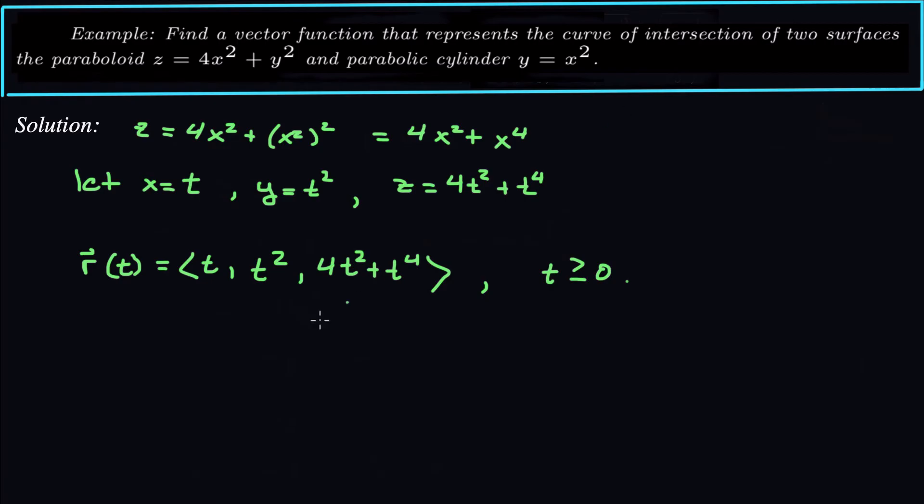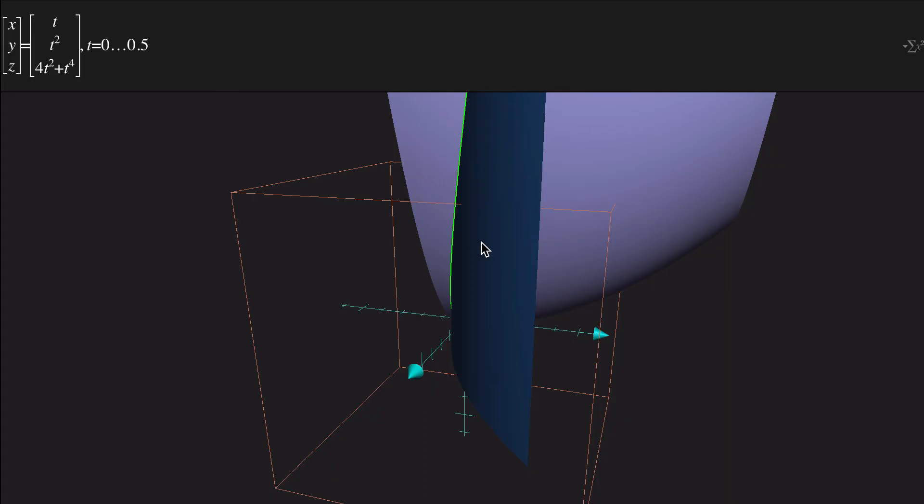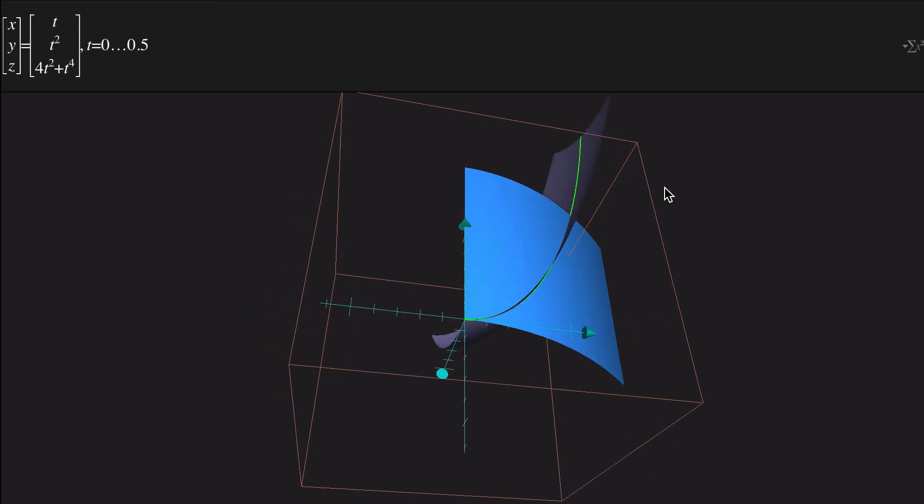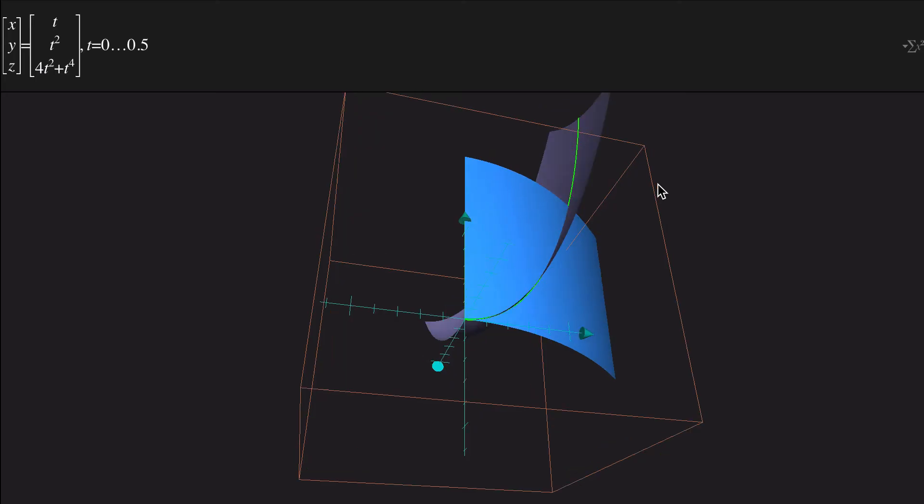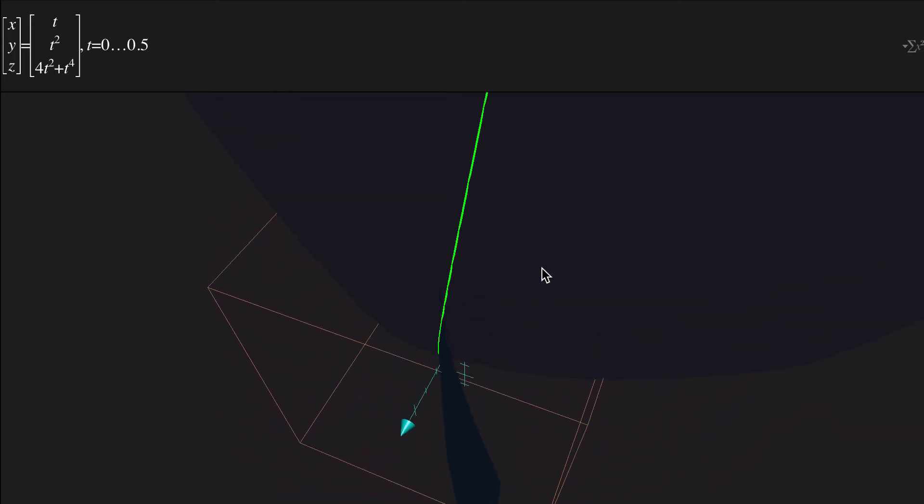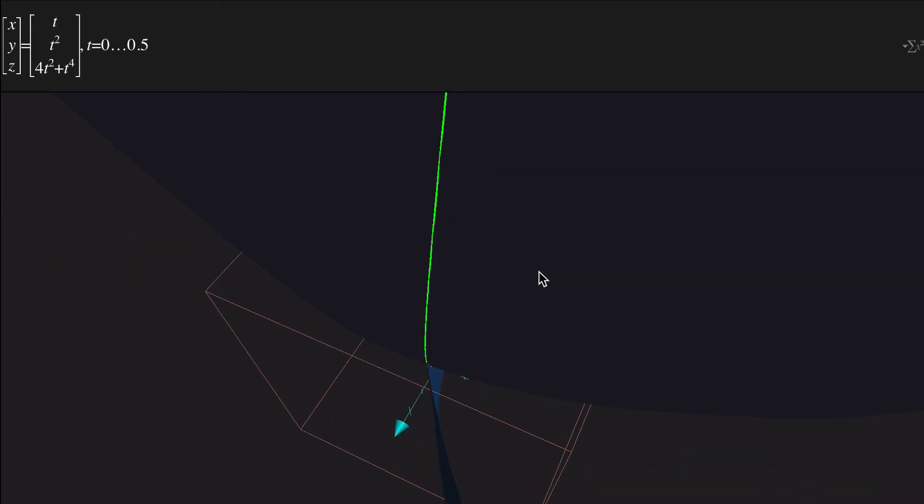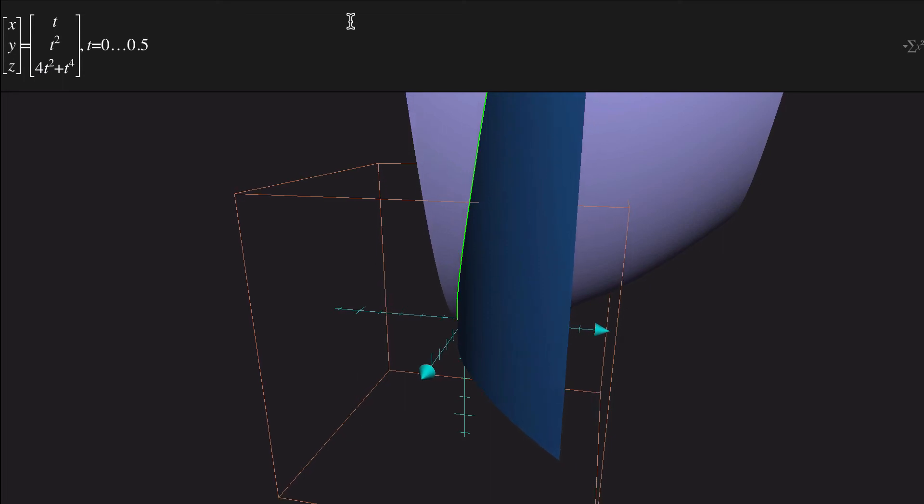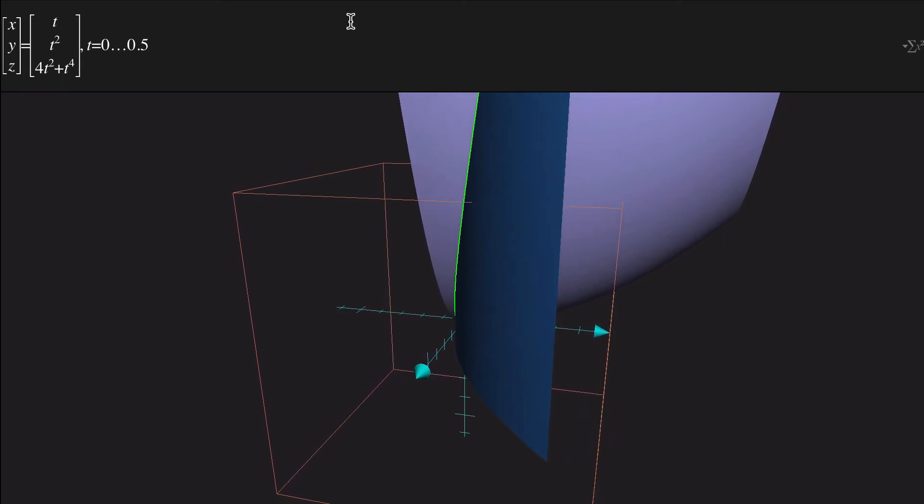So let's plot this vector function in addition to those two surfaces. So when I throw that vector function there, look at that. That vector function that we just found is indeed that curve of intersection, it's the green line here. So that curve of intersection right there is x equals t, y equals t squared, z equals 4t squared plus t to the 4.